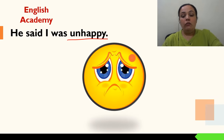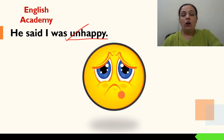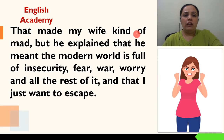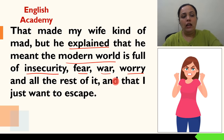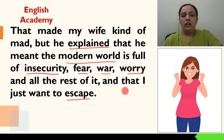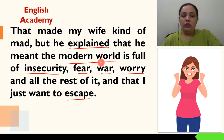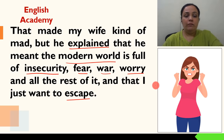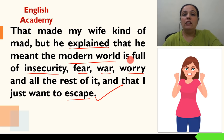He said I was unhappy. Further psychiatrist Charlie ko kehta hai ki woh naakhush hai apni zindagi se, tabhi woh aisi cheezein dream kar raha hai aur unke sach hone ke baare mein soch raha hai. That made my wife kind of mad, but he explained that he meant the modern world is full of insecurity, fear, war, worry and all the rest of it, and that I just want to escape. Jo modern world hai usmein bahut zyada insecurities hain, darr hain, ladaiyaan chal rahi hain, aur is wajah se everyone wants to escape out of this real life.